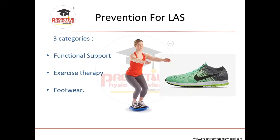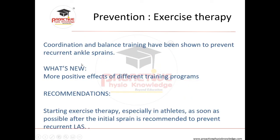For prevention of lateral ankle sprain, three categories are considered: functional support, exercise therapy, and footwear. Coordination and balance training — neuromuscular and proprioceptive training — definitely have an effect in reducing recurrence. Training programs should be tailored to the requirements of the athlete's specific sport. Starting exercise therapy as soon as possible after initial sprain is important, especially for athletes, to maintain slow motor unit recruitment. If slow motor units are not recruited after pain subsides, there is a proprioceptive deficit.